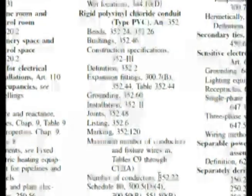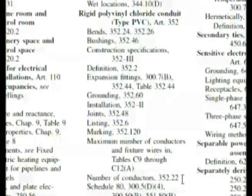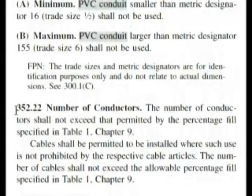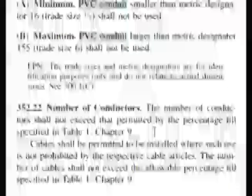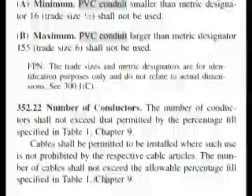Our next thing in the index is number of conductors. The wording of our question was 'number of conductors permitted in PVC conduit' — that's where we're going to look: 352.22. Here we are at 352.22, number of conductors. It says the number of conductors shall not exceed that permitted by the percentage fill specified in Table 1, Chapter 9. And that was one of our answers. It continues: the number of cables shall not exceed the allowable percentage fill specified in Table 1, Chapter 9. This is answer A of our question.